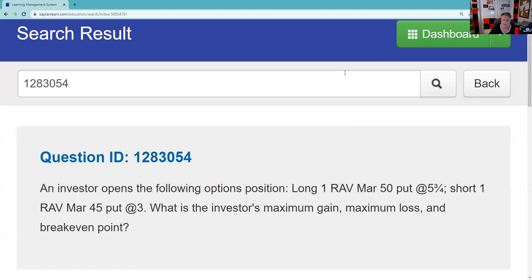Well, I believe particularly in put contracts that you really should be disciplined about contract specifications. So I'm hoping that as you practice, drill, and rehearse, when you look at that long RAV, March 50 put, you say, okay, I have a choice to sell the stock at the strike price. I paid five and three quarters to be able to stick it to somebody at 50. I'm the put-er at 50. And I'm hoping, again, with practice, drill, and rehearse, you look at a short RAV, March 45 put at three, at some point you're not fumbling around, but that's an obligation to buy the stock at the strike price. So I'm the put-er at 50. I'm the put-e at 45.